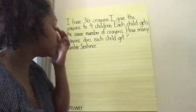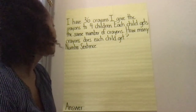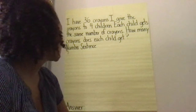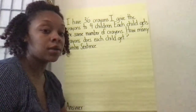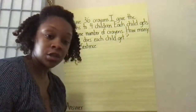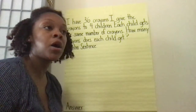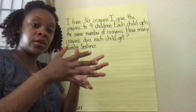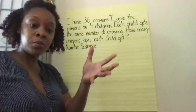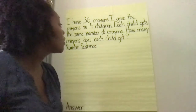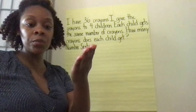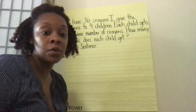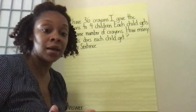So let's read it again. I have 36 crayons. I give the crayons to four children. Each child gets the same number of crayons. How many crayons does each child get? During that read, you were thinking about the relationship between the values. Is there a whole that we're given and we have to figure out one of the parts? Or do we know both of our parts to make the whole? Or is this a compare problem where we figure out how much more or how much less?